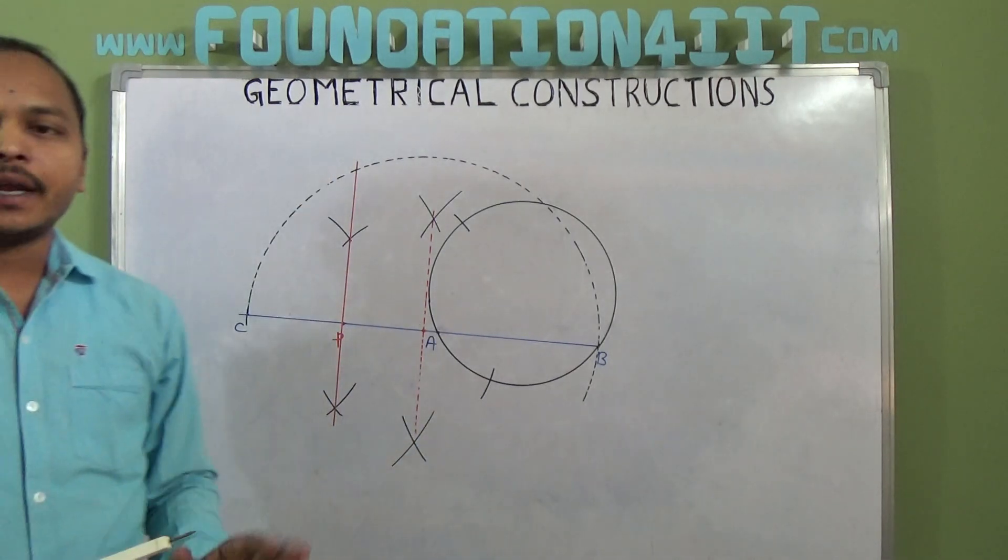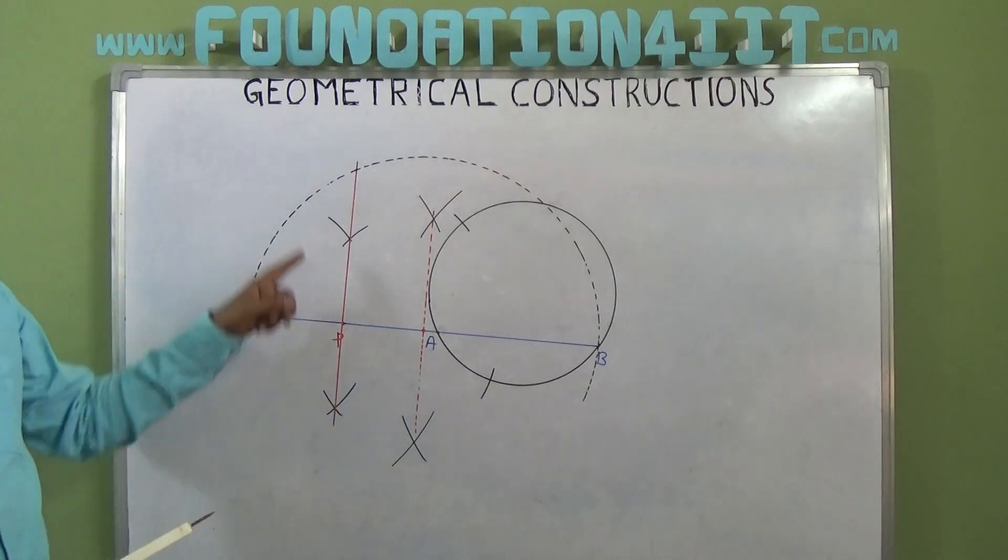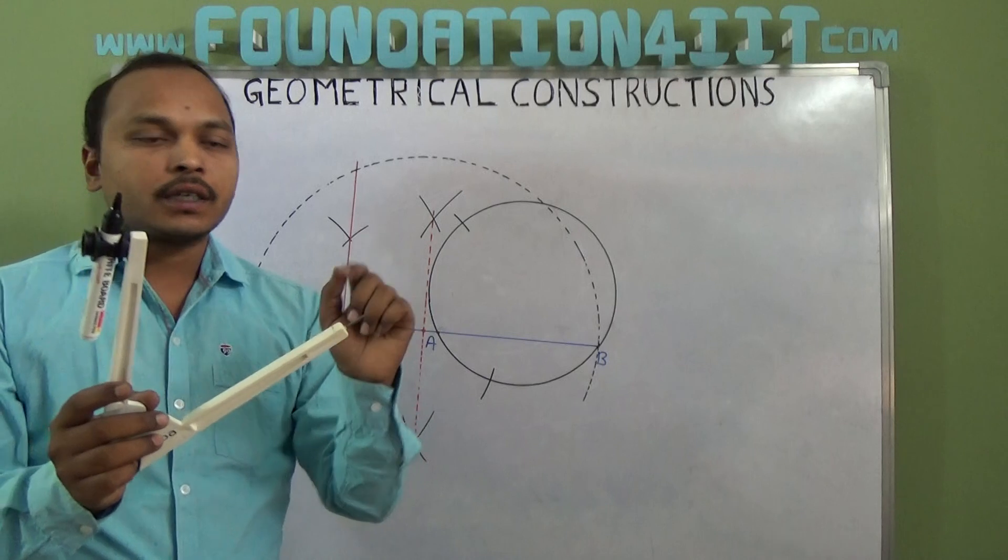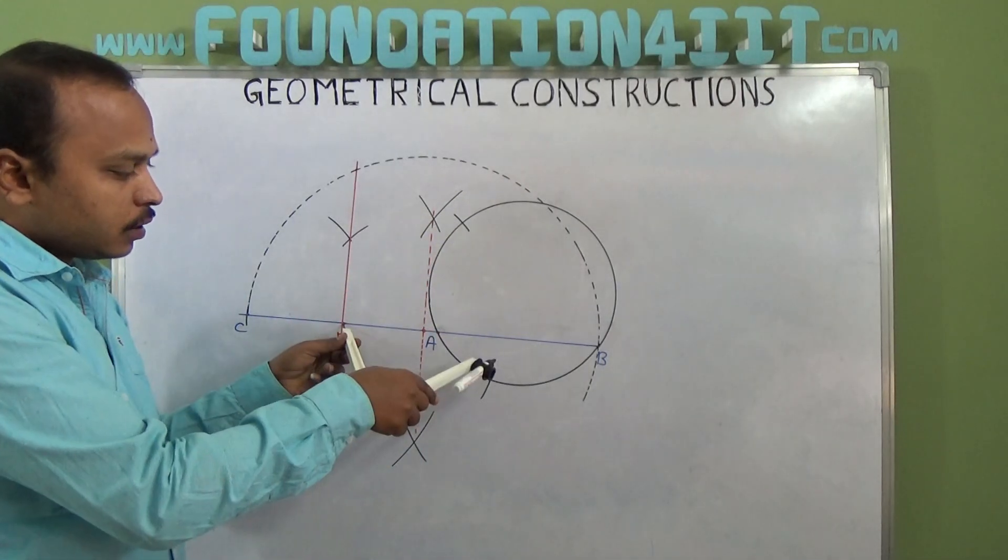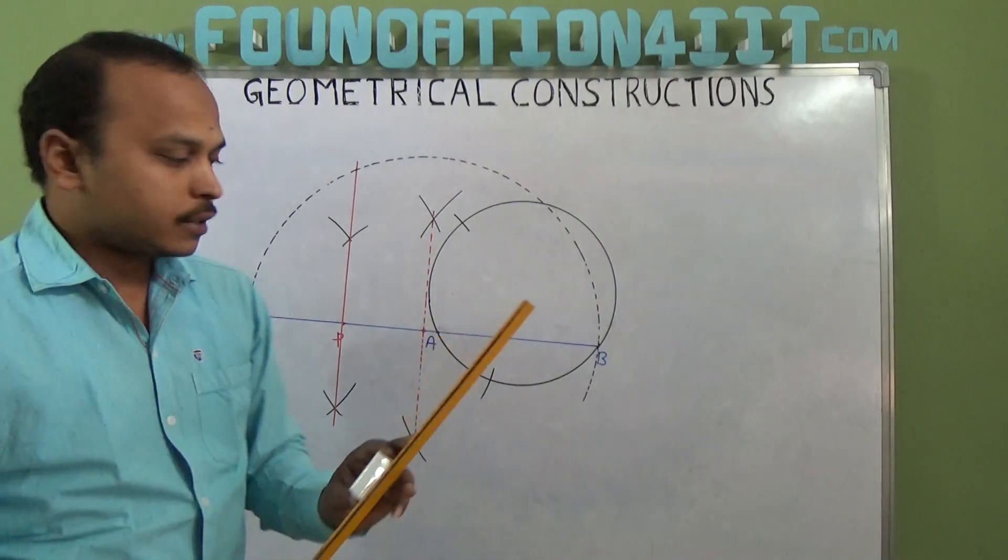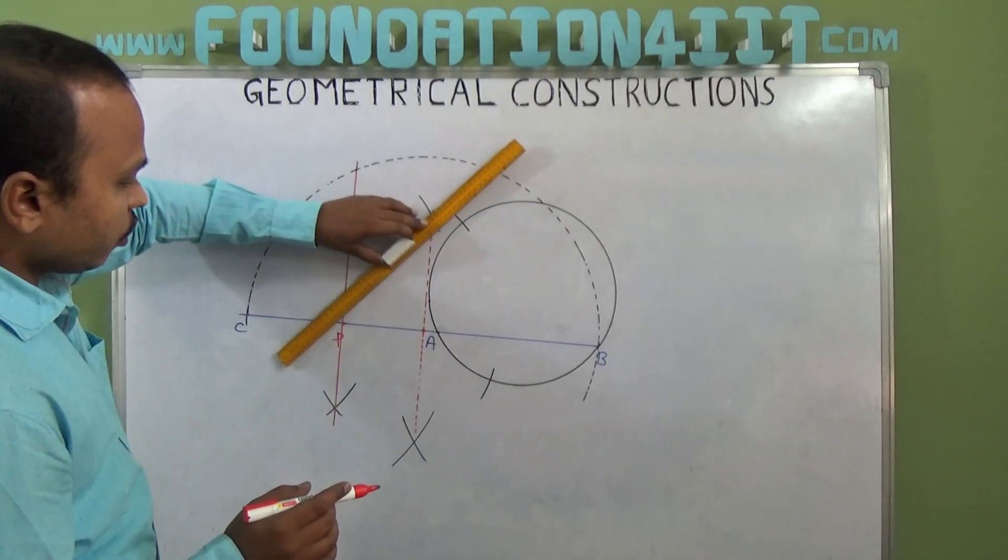After constructing perpendicular line at the point P, P to here you find out the distance, how much. With that compass, from the P draw an arc this side and this side. That's it. Now they are the tangent points. From the P you can join this.